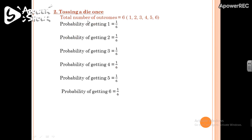The next example is tossing a die once. A die has 6 numbers: 1, 2, 3, 4, 5, and 6. Whenever you toss a die, you can get 1, 2, 3, 4, 5, or 6, so the total number of outcomes equals 6. The probability of getting 1 equals the number of ways of getting 1 — which is only one way — divided by 6. So the probability of getting 1 equals 1/6.